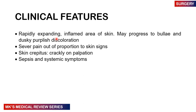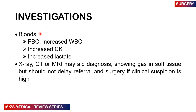Clinical features include a rapidly expanding inflamed area of skin that may progress to bullae — fluid-filled blisters — and dusky purplish discoloration. There is severe pain out of proportion to the skin signs, and crepitus may be felt on palpation. The patient may go into sepsis with systemic symptoms. Investigations include a full blood count showing raised white blood cell count and elevated lactate. X-ray, CT scan, or MRI may show gas in the tissues, but clinical suspicion alone should prompt urgent referral and surgery without waiting for imaging.